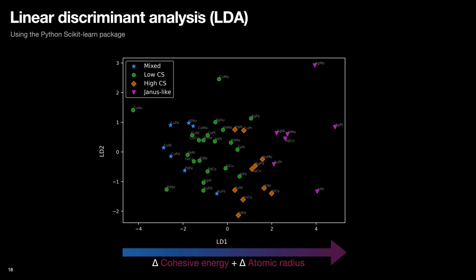So here, each data point represents each bimetallic combination, and they are color coded based on the equilibrium structure found by MD and Monte Carlo. We can see that the first axis explains the pattern quite well.